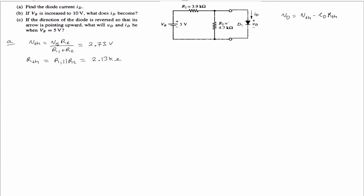Before we find the short-circuit current, let's simplify the load line equation for Id. Id becomes negative 1 over Rthevenin (which is the slope of the load line) times Vd, plus Vthevenin over Rthevenin. This is the y-intercept, which is going to be the short-circuit current. The short-circuit current for A is equal to Vthevenin over Rthevenin, which is equal to 1.28 milliamps.